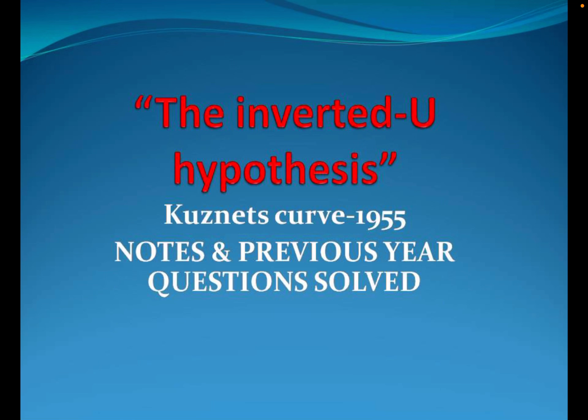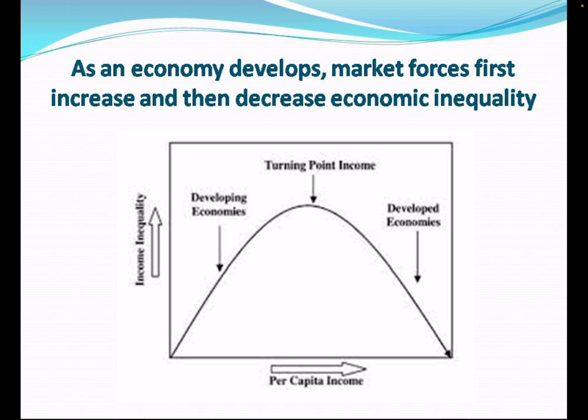Hello everyone, welcome to Economics by Avisha and Arpita. Our current topic is the Inverted U Hypothesis, which is also known as the Kuznets Curve. If you see this curve, on the x-axis we are given per capita income, and on the y-axis it is income inequality.